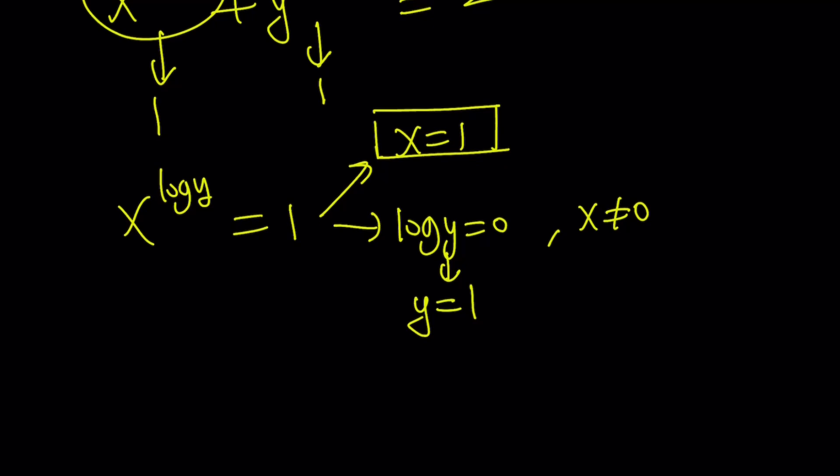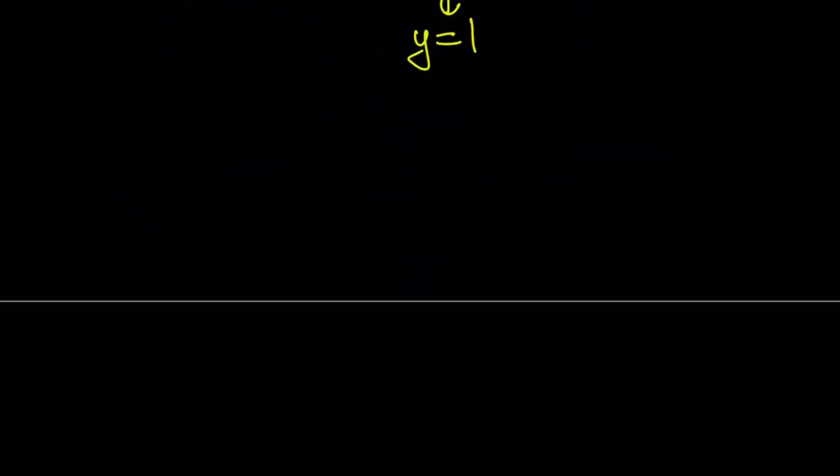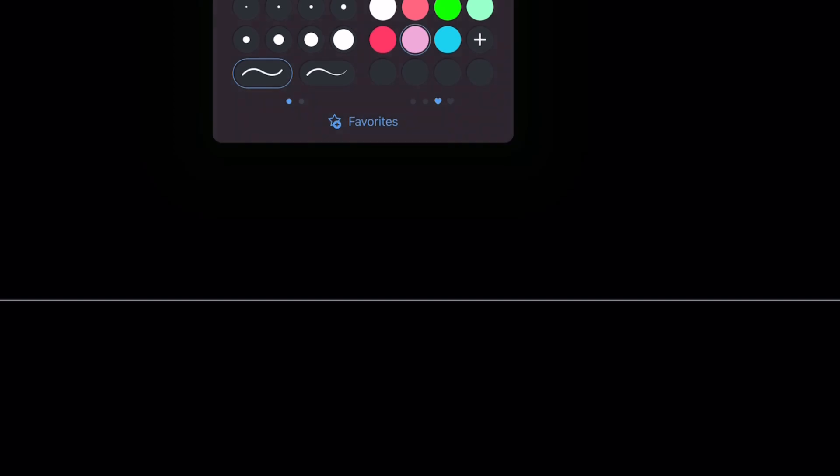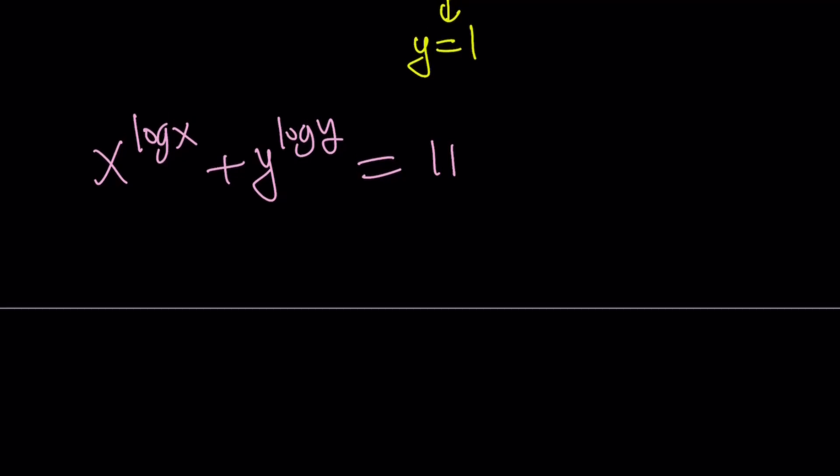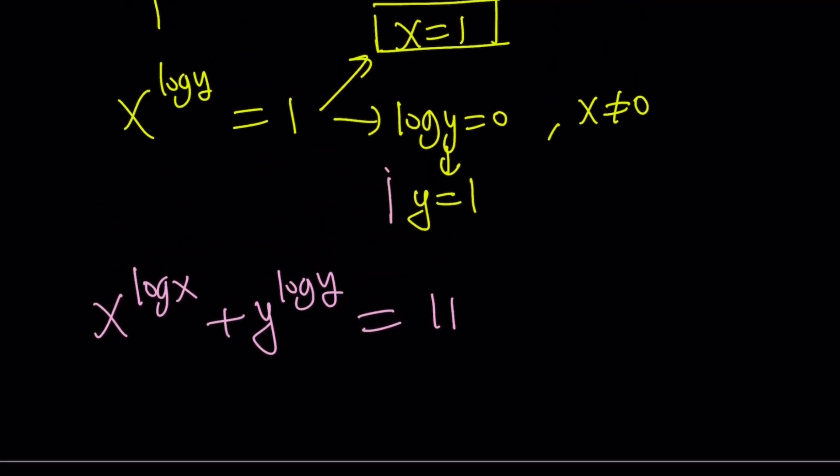So let's take a look. When x equals 1, what happens in the second equation? That's something we need to check. So let's go ahead and rewrite the second equation. The second equation tells us x to the power log x plus y to the power log y equals 11. But before I start substituting, let's go ahead and take a look at the solutions. Like what does the first equation give us? x equals 1 or y equals 1 because either one can be true.